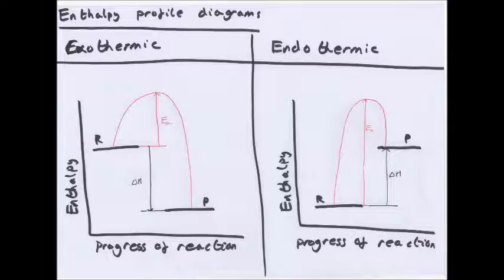Enthalpy profile diagrams are diagrams for a reaction that compare the enthalpy of the reactants with the enthalpy of the products. Starting with the exothermic one: on the y-axis you have enthalpy, and we know that enthalpy for the products and reactants will decrease overall during the reaction, so the reactants will have a higher enthalpy than the products. R and P mark the reactants and products respectively. As the reaction progresses, you draw a downward-facing arrow from reactants to products — delta H decreases. Make sure you get the arrowheads the right way.